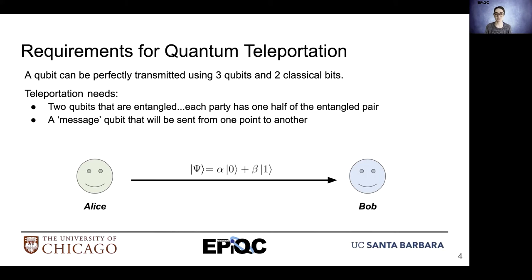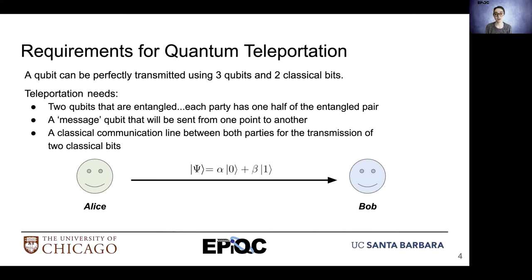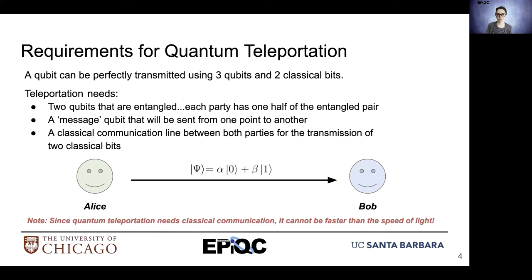We also need a message qubit that is to be transported. Finally, we need a classical communication line that allows transmission between both parties — we need to transmit a couple of bits. Since teleportation requires that classical communication line, it cannot be faster than the speed of light.